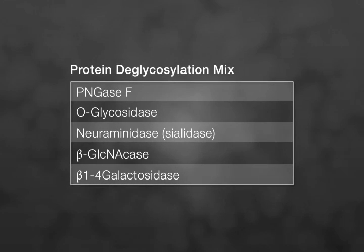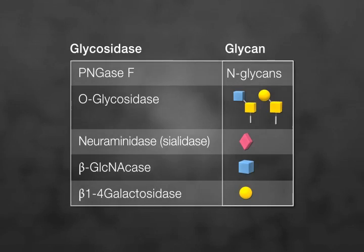The protein deglycosylation mix is a combination of PNGase F, O-glycosidase, neuraminidase (also called sialidase), beta-GlcNAcase, and beta-1,4-galactosidase. As shown before, PNGase F removes most N-glycans. O-glycosidase removes core-1 and core-3 O-glycans.